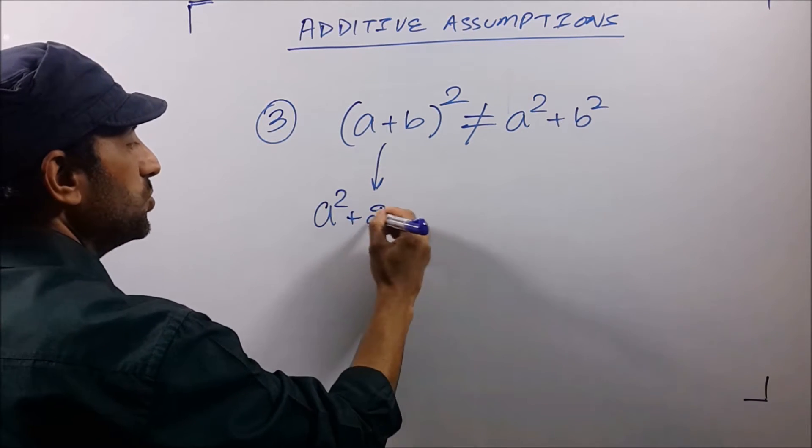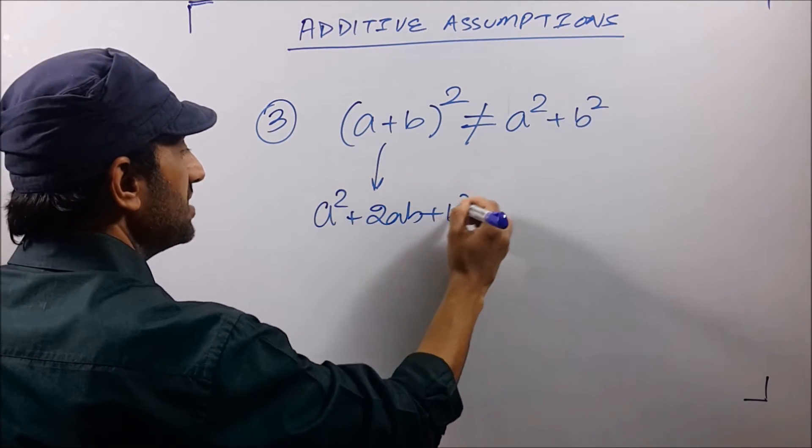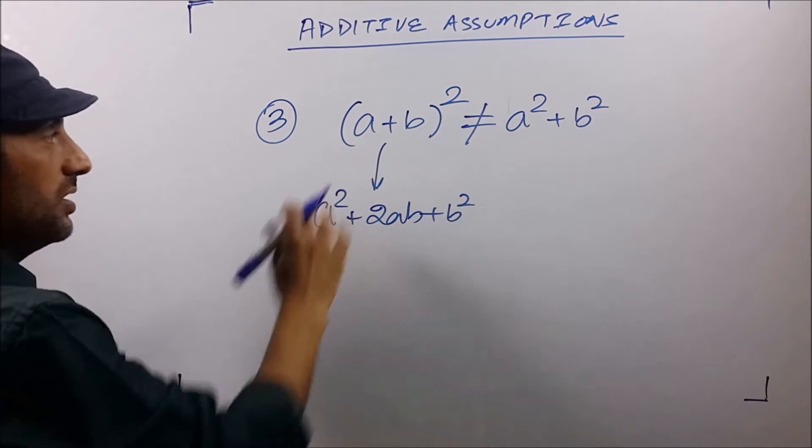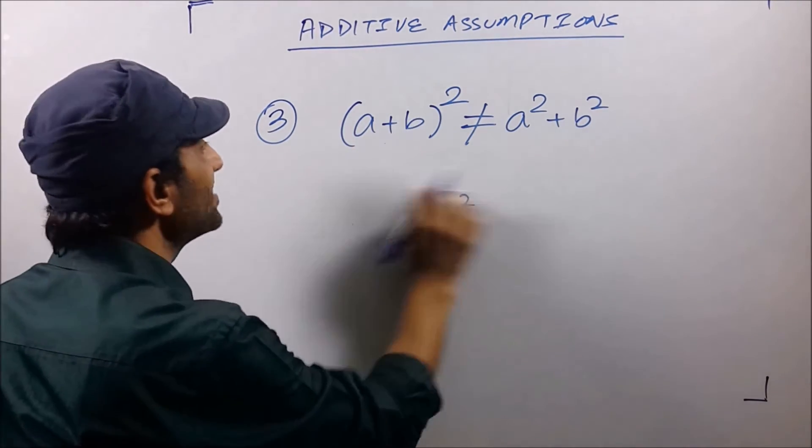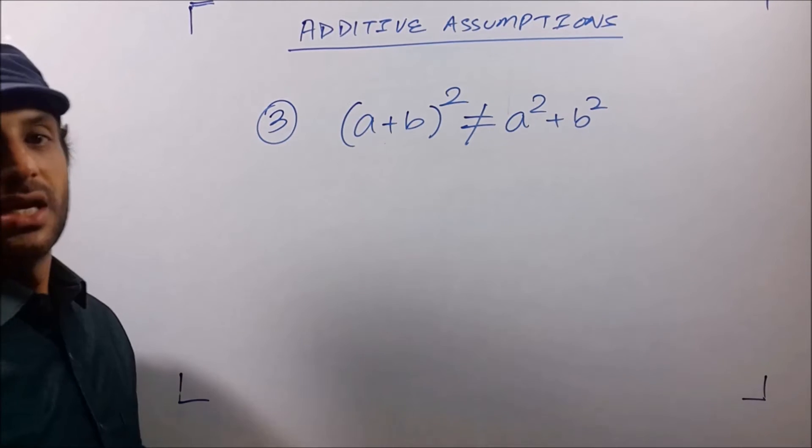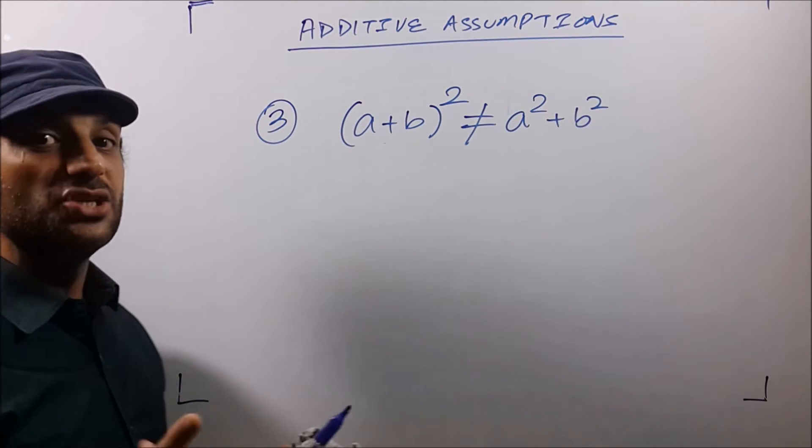a²+2ab+b². So (a+b)² is not at all equal to a²+b² in general.